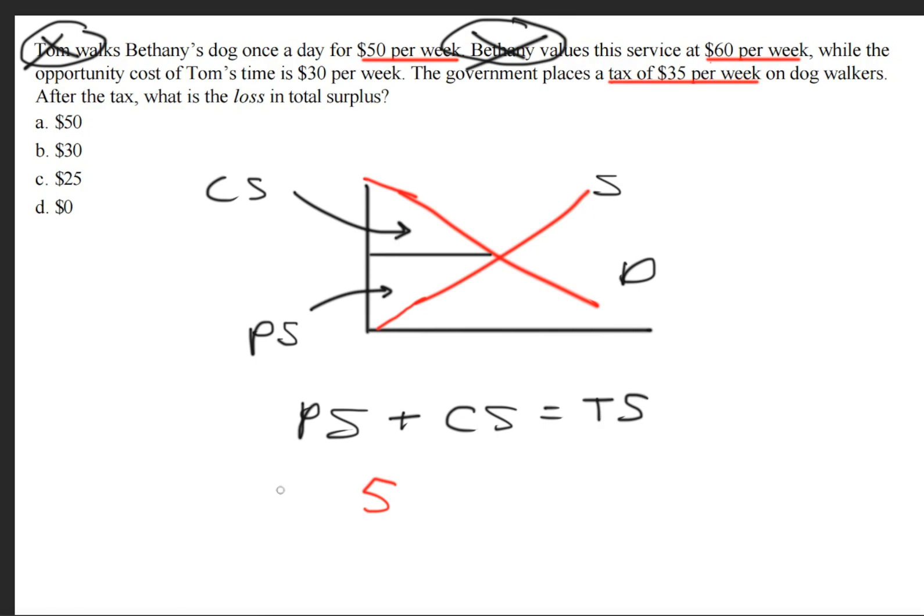So what we'll have here is 60 minus 50. Because right here, we'll have $60. Right here, we'll have... So we get that our answer will be the producer surplus plus the consumer surplus, which will give us the total surplus. And this will be the loss because this also, in this case, is equal to the deadweight loss.